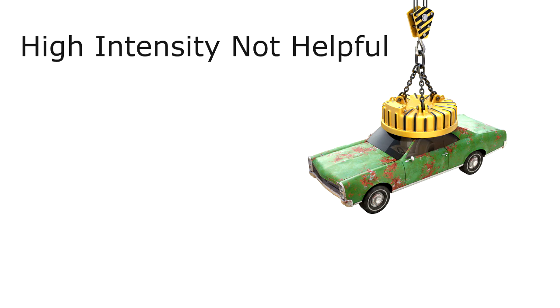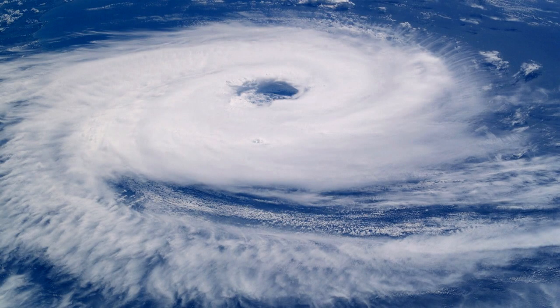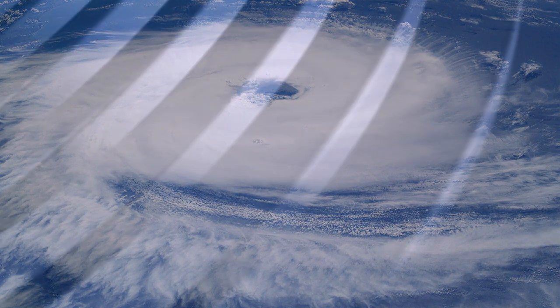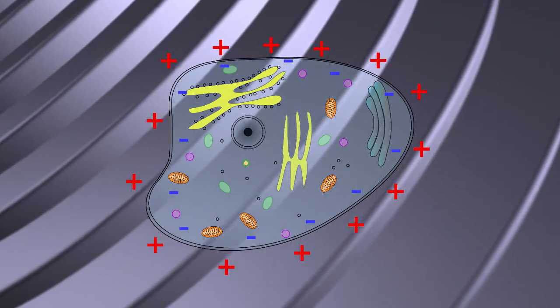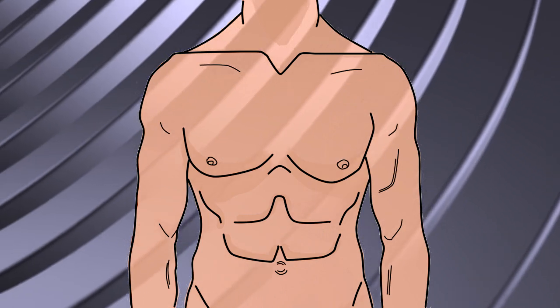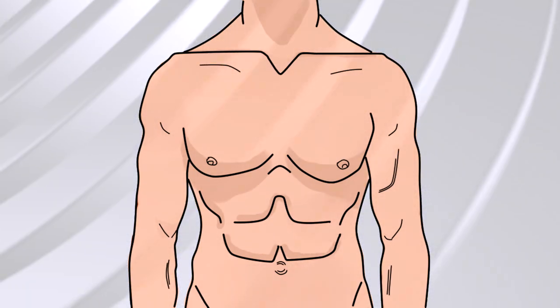High intensity PEMF devices that use anywhere from 0.1 to 3 Tesla, which is about 1,000 to 30,000 Gauss of intensity, will create circulating eddy currents in your body that are way too strong - kind of like a category 3, 4, or 5 hurricane. You do not want a super strong eddy current at the cellular level because that can damage the cells long term. Yes, your body can handle it short term, but it's not something you want to be using every day.